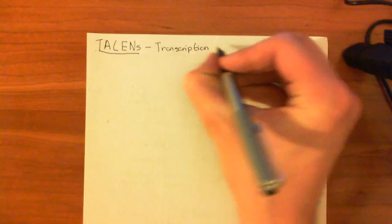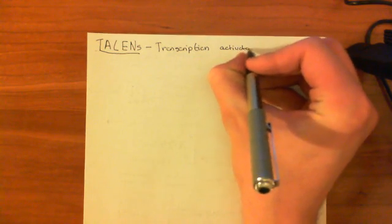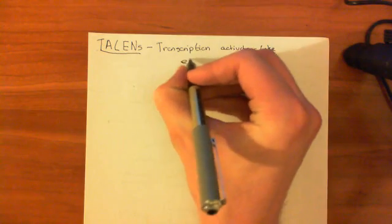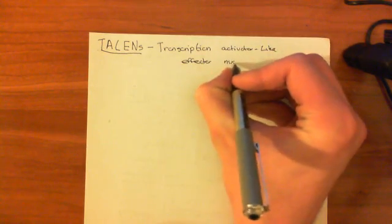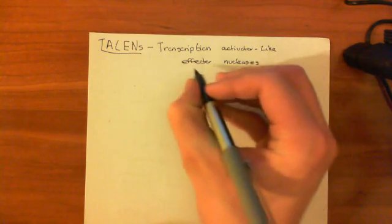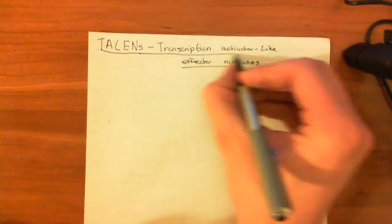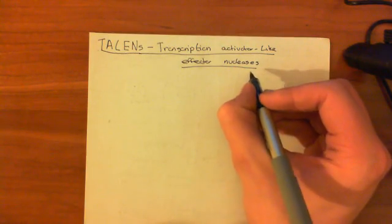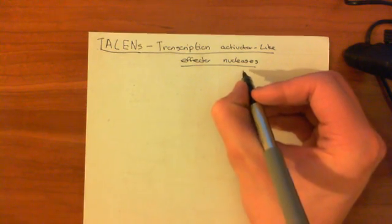TALEN stands for Transcription Activator-Like Effector Nucleases. Basically these are a type of restriction enzyme, which means that they are going to recognize a specific DNA sequence and cut at that specific DNA sequence.